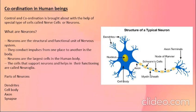Control and coordination in human beings is mainly brought about with the help of special cells called nerve cells or neurons. Neurons are the structural and functional unit of the nervous system. They conduct impulses from one place to another in the body. Neurons are the largest cells in the body. The cells that support neurons and help in their functioning are called neuroglia.